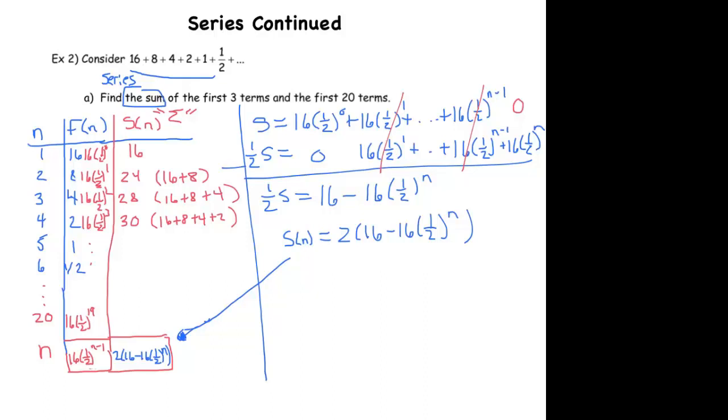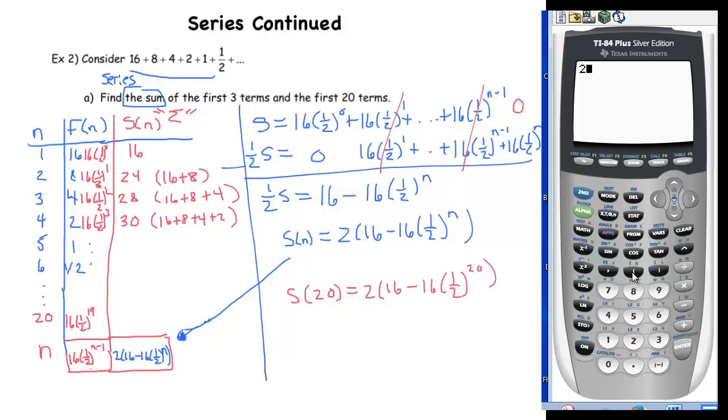So we wanted to figure out the sum of the first 20 terms, so S of 20, is simply a matter of plugging in. 2 times 16 minus 16 times one half to the 20. So we'll put that in the calculator here. And when you do that, so 2 times 16 minus 16 times one half to the 20, that gives me 31.9996948. And so that is going to go right here. That is the sum of the first 20 terms.